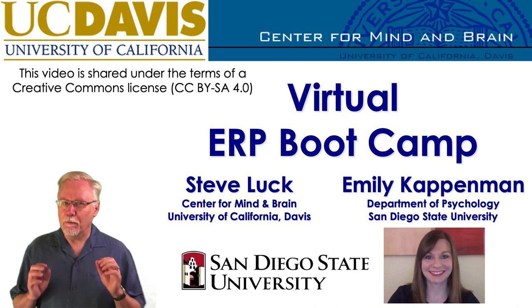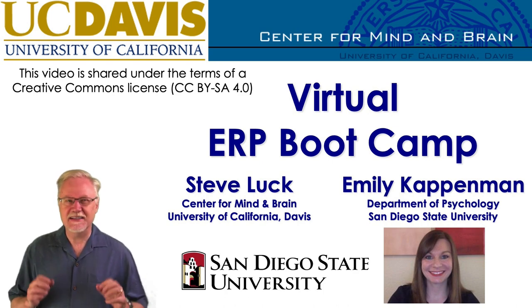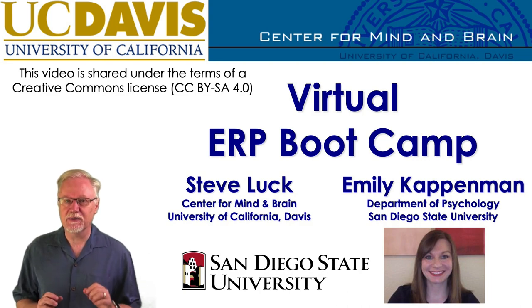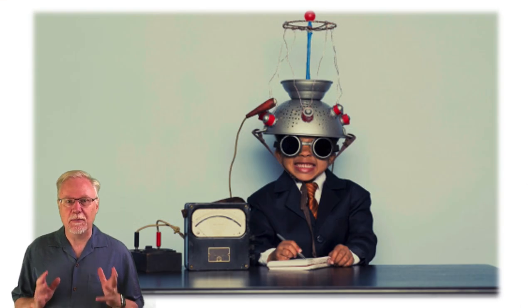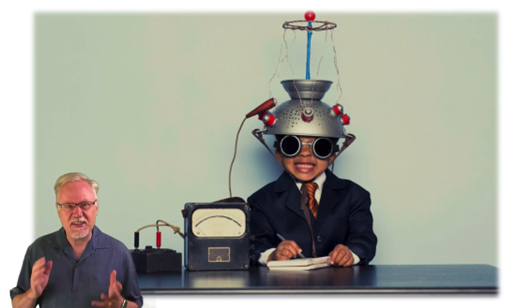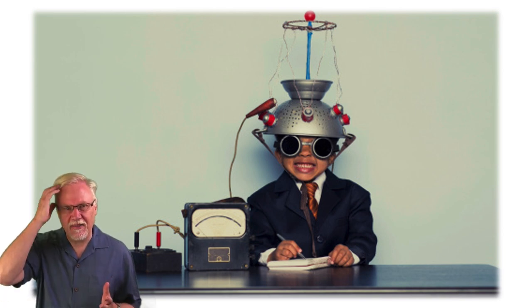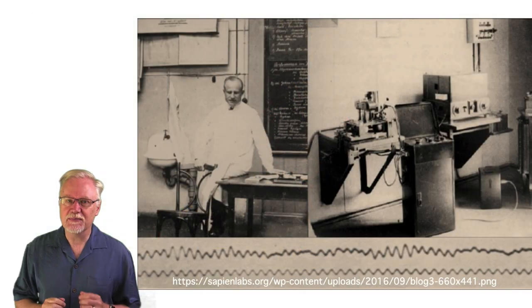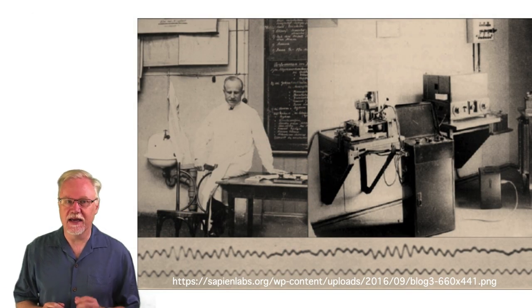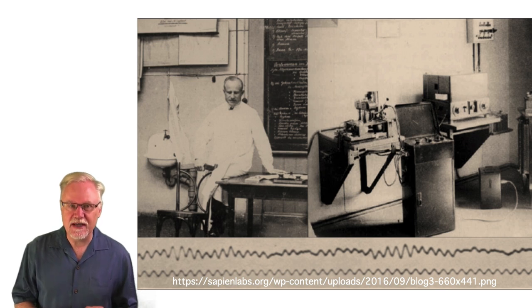I'd like to begin with a completely crazy, preposterous idea — namely that it's possible to record meaningful brain activity from electrodes placed on the skin with the skull separating the electrodes from the brain. When Hans Berger first recorded the EEG from the human scalp in the 1920s, most neuroscientists thought he was crazy and was just picking up random junk.